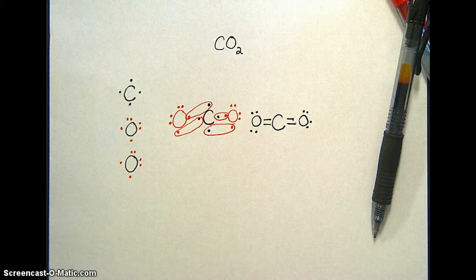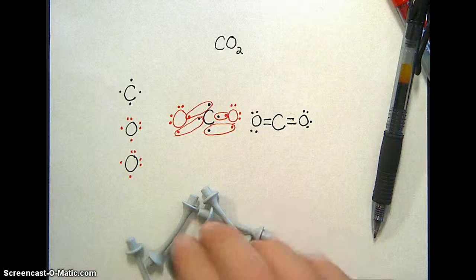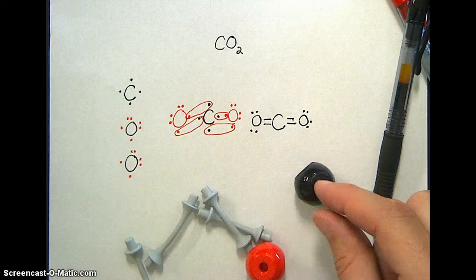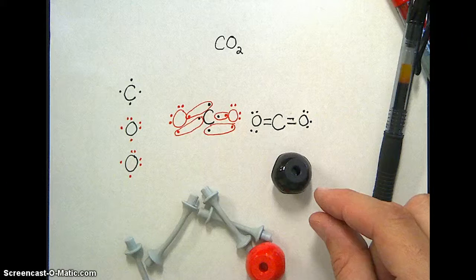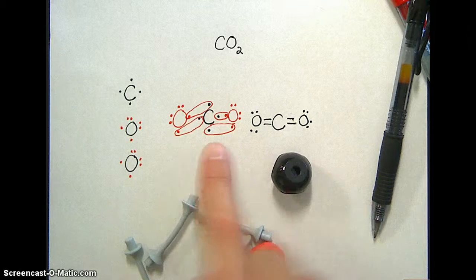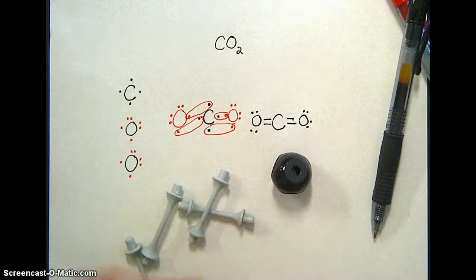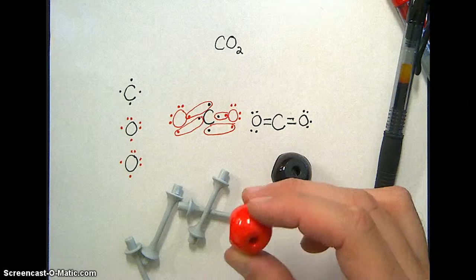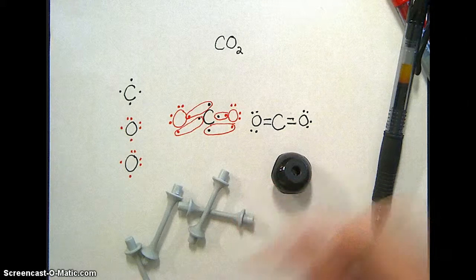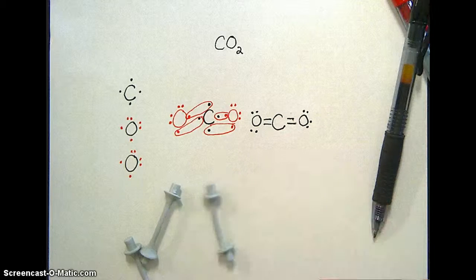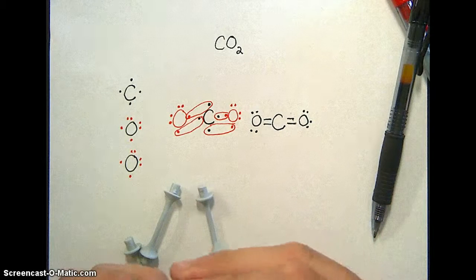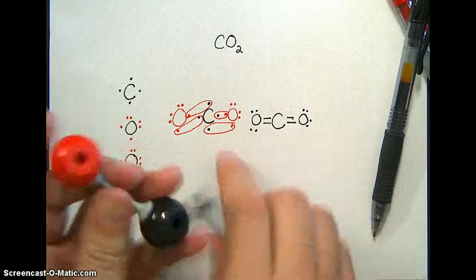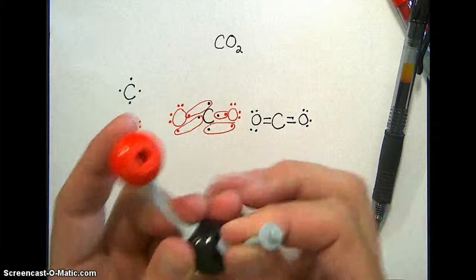I can also show this with some handy little model kits. I have a little sphere to represent carbon. You'll notice it has four little holes there for bonds to connect into. Just like our initial carbon had four individual bonding sites. I have some oxygens. Each oxygen has two little bonding sites available to it. So I can show a carbon double bonded to oxygen with these little flexible sticks. Here's a carbon connected to an oxygen once and then connected to an oxygen twice.